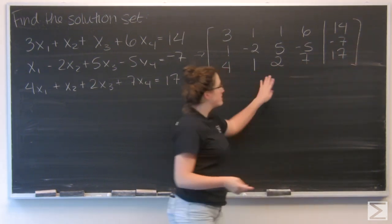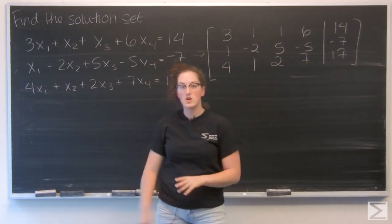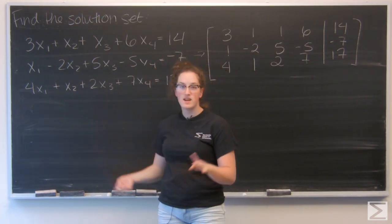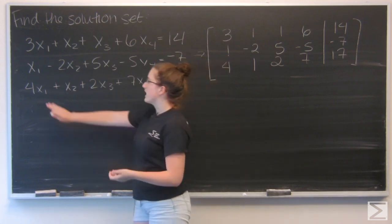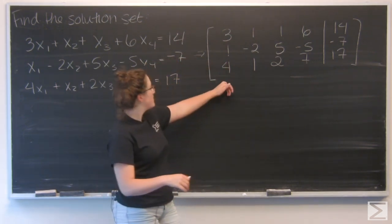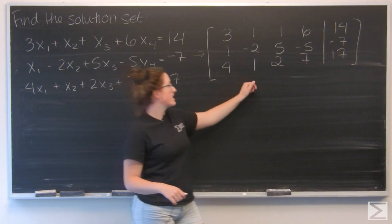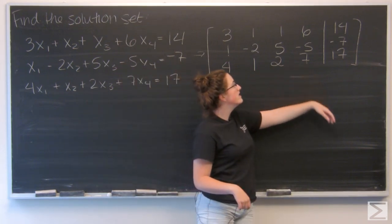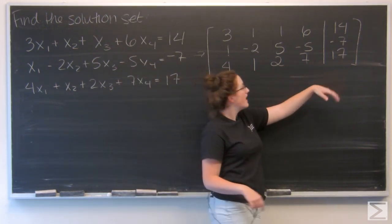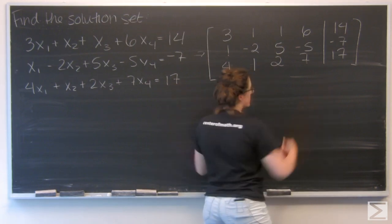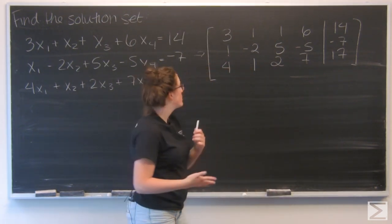So for that augmented coefficient matrix I have just taken the coefficients from each of my x's and put them in the matrix. So I have the first column matches the coefficients of x1, x2, x3, x4. Think about this bar as my equals sign and then what all the equations equal.